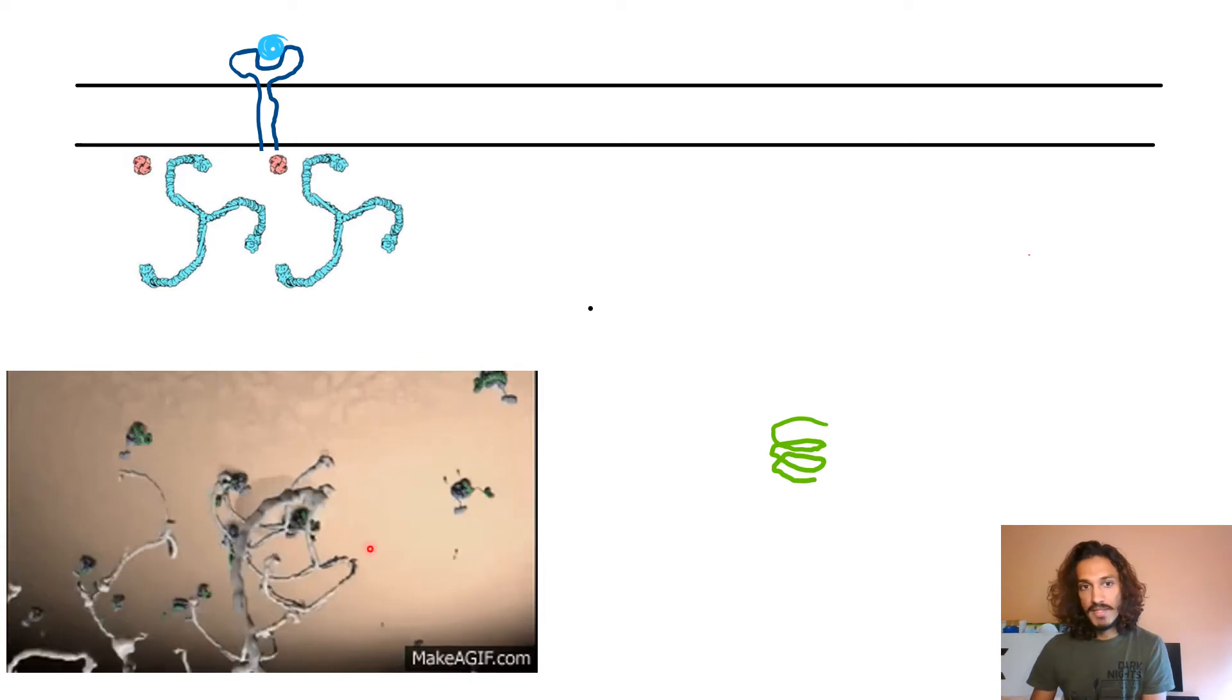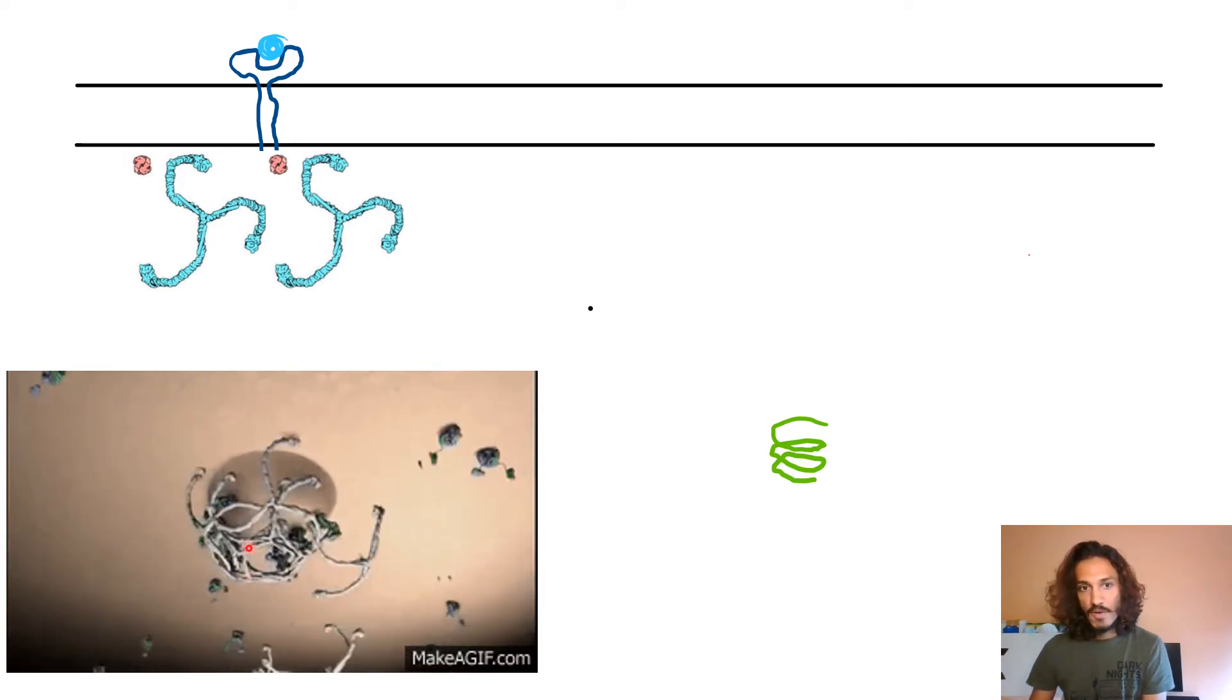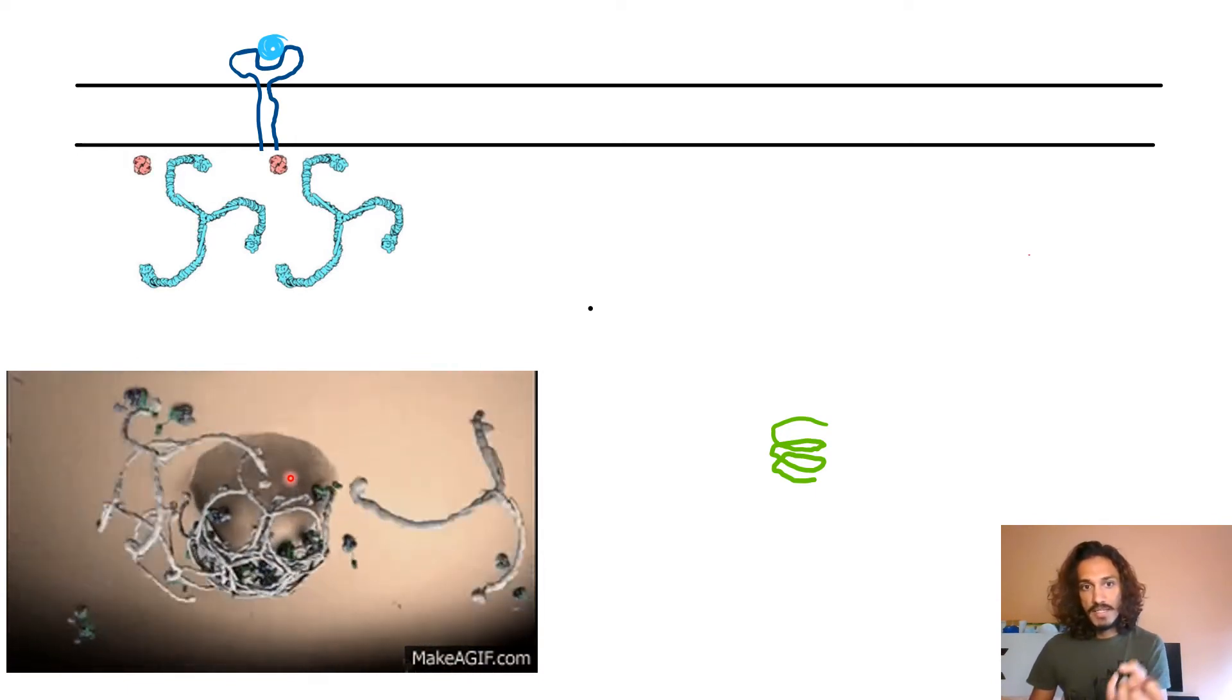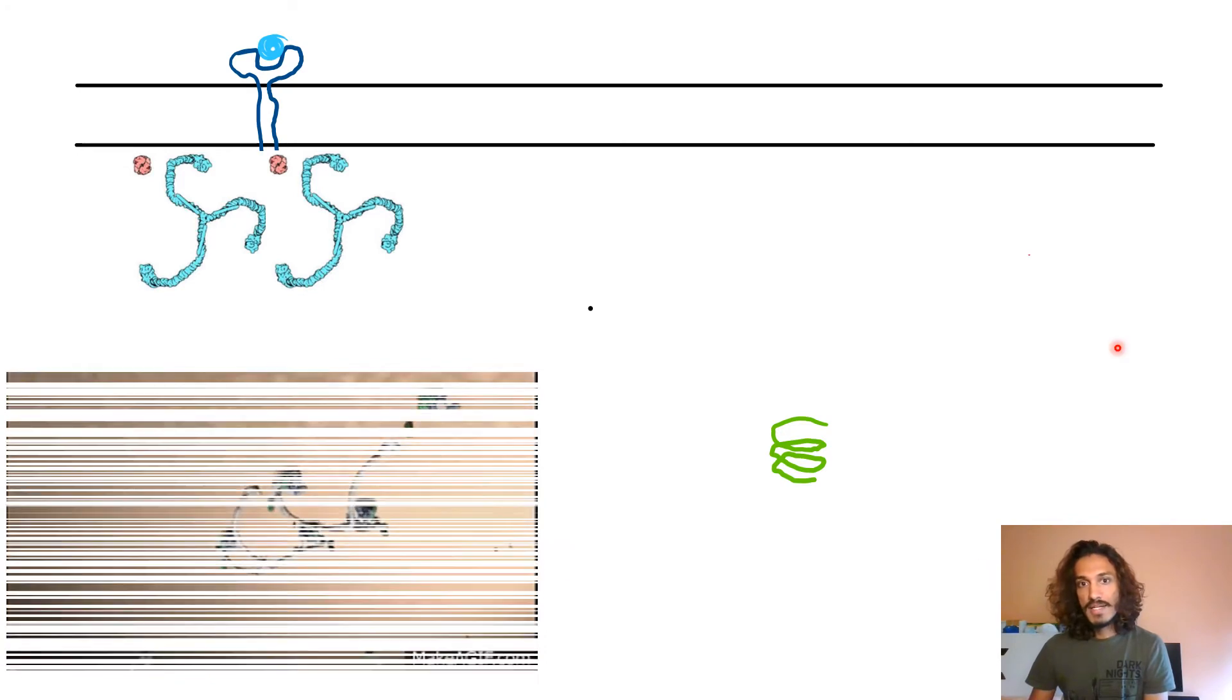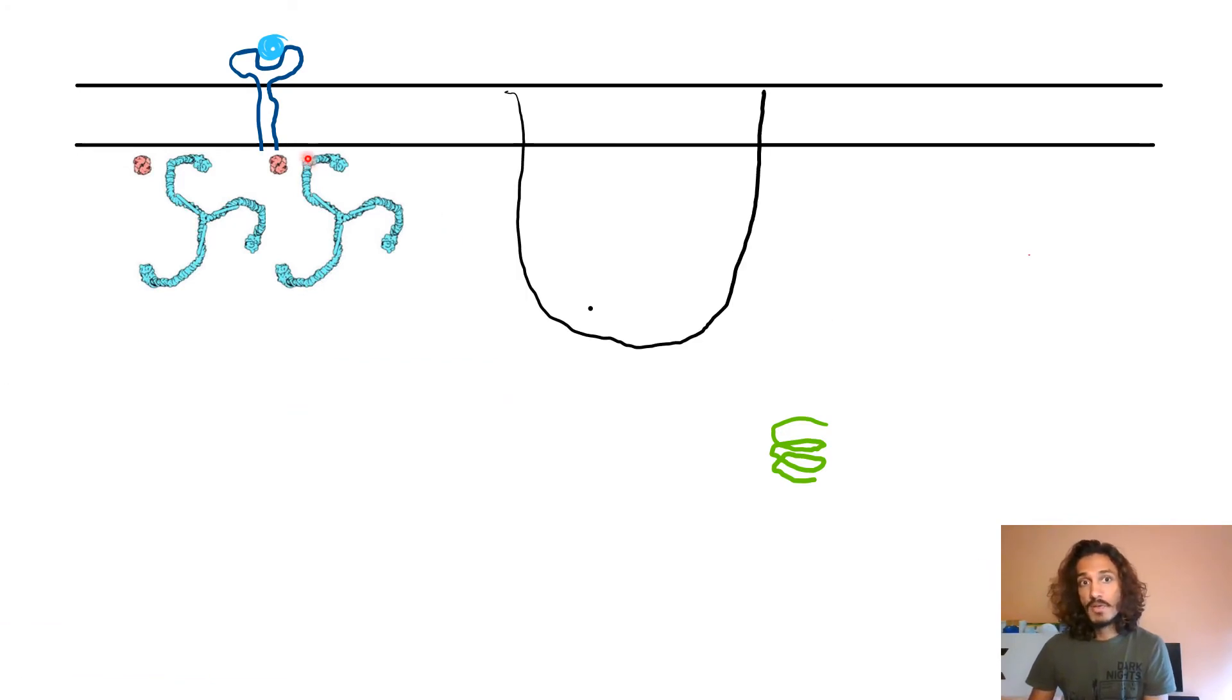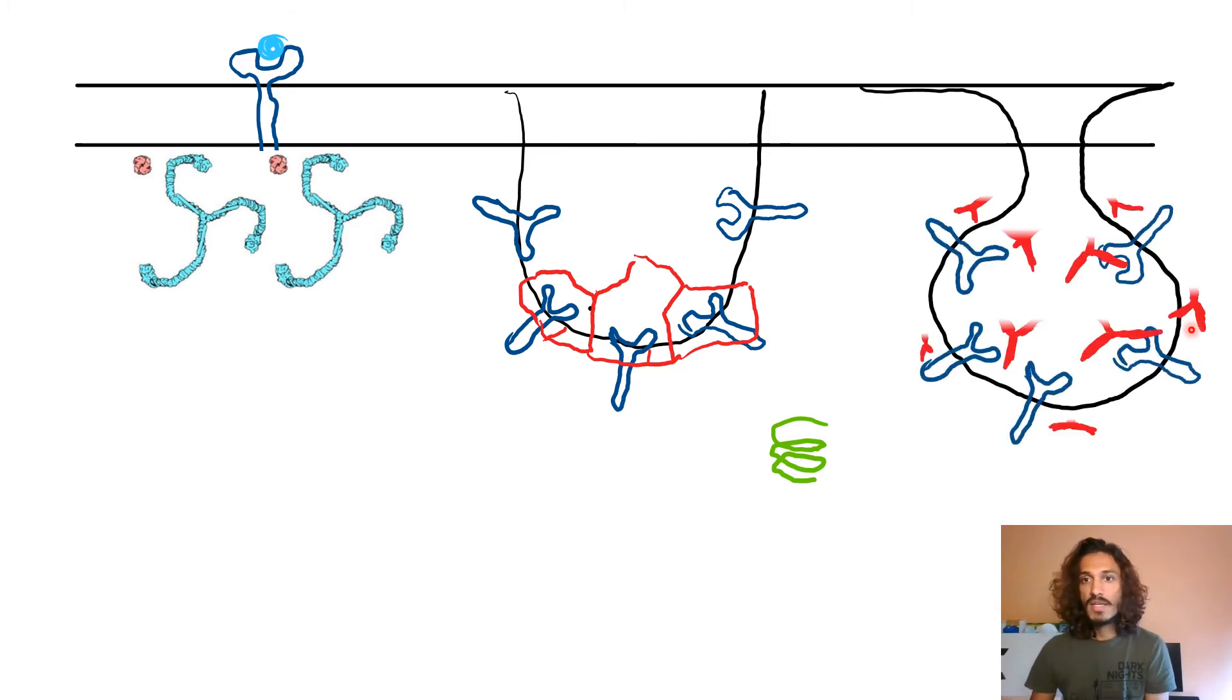The triskelion will start forming the cage and it starts budding out. This part of the membrane is now going to invaginate inside and you can see that the triskelion starts forming a cage. For your understanding, I kept the triskelion structure like this. Now we're going to link them and thus we form the cage.